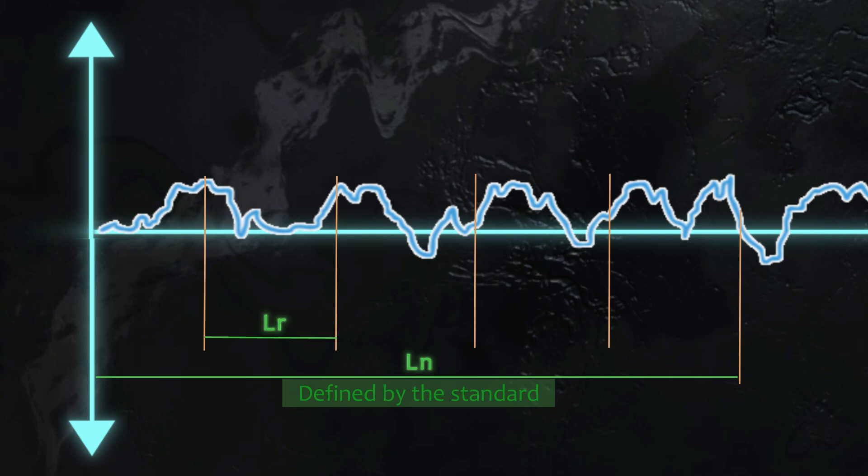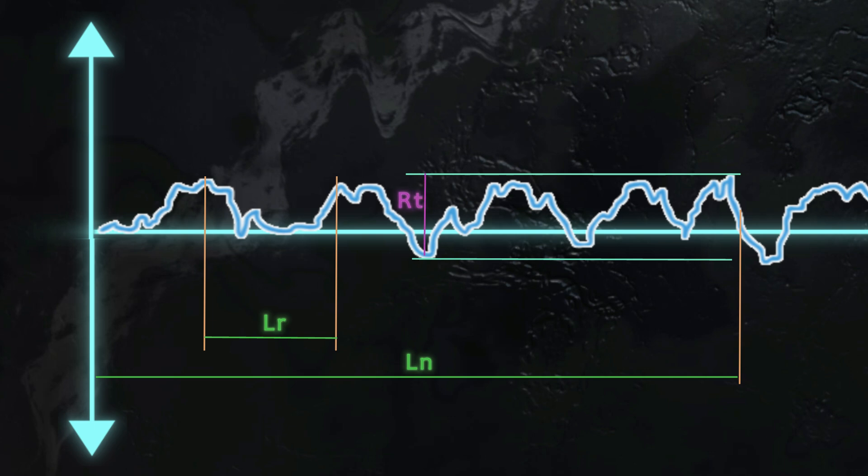Rt is the distance from the lowest valley to the highest peak along the total evaluation length, Ln.